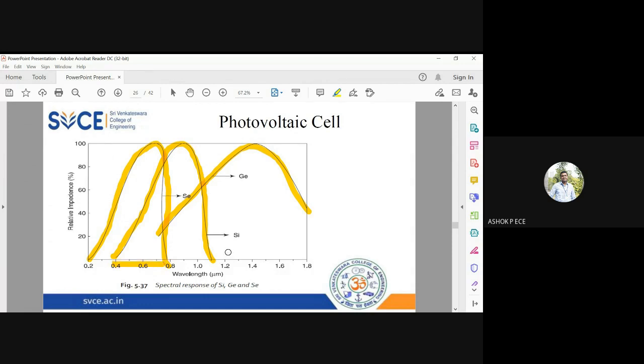Silicon and germanium extend further into the infrared band. Selenium provides 100% impedance at visible light frequencies, with the peak occurring at visible wavelengths, whereas in silicon and germanium, the peak occurs at infrared frequencies which are not visible to the human eye.